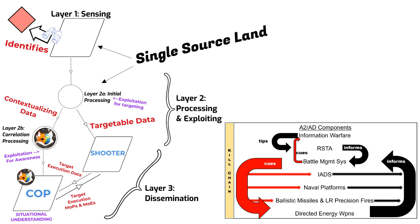The more you know about the enemy's systems, and the more you know about yours, the better you'll be able to disintegrate A2AD networks. That was both a lot of information and not nearly enough. To learn more, contact your installation's Foundry facility, your unit's digital intelligence system master gunner, or the Army Foundry platform at Fort Liberty, North Carolina. Until next time, stay safe and God bless.